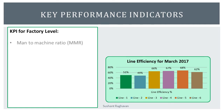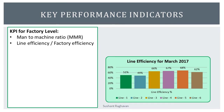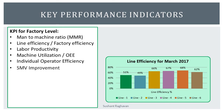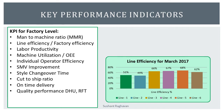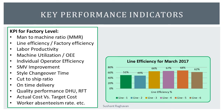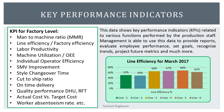Key performance indicators at the factory level include: man-to-machine ratio, line efficiency, factory efficiency, labor productivity, machine utilization, overall equipment effectiveness, individual operator efficiency, SMV improvement, style changeover time, cut-to-ship ratio, on-time delivery, quality performance, DHU, RFT, actual cost versus target cost, and worker absenteeism rate. This data shows KPIs related to various functions performed by the production staff. Management is able to use this data to provide reports, evaluate employee performance, set goals, recognize trends, project future metrics, and much more.